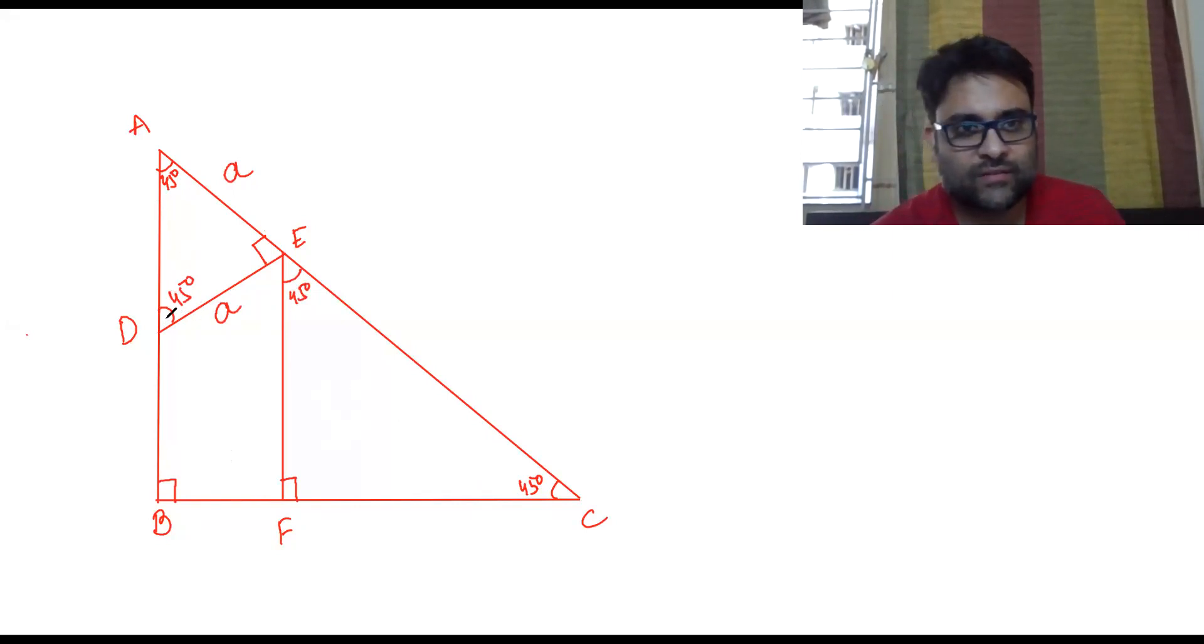If this is a and this is a, what will this side be? This side will be root 2 times a. Why? Because hypotenuse squared equals perpendicular squared plus base squared, so a² + a² gives us root 2 times a.